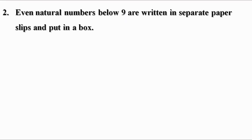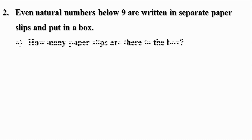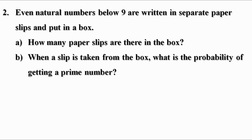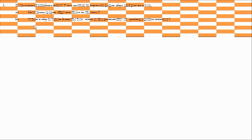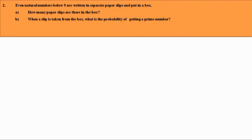Second question. Even natural numbers below 9 are written on separate paper slips and put in a box. How many paper slips are there in the box? The even numbers below 9 are 2, 4, 6, 8. Therefore, there are 4 even numbers below 9, and hence there are 4 paper slips in the box.